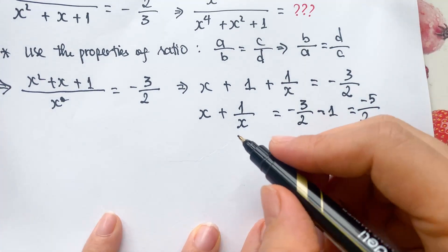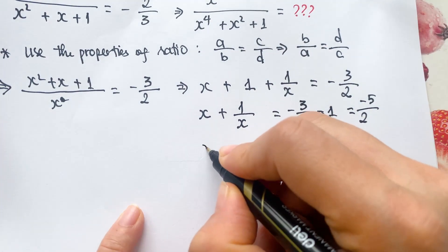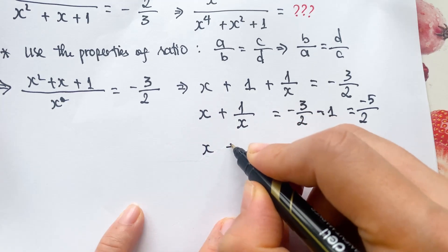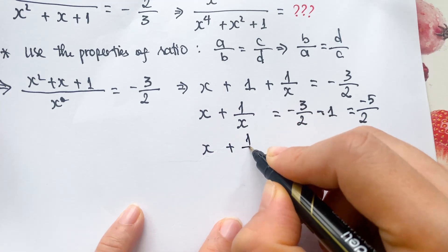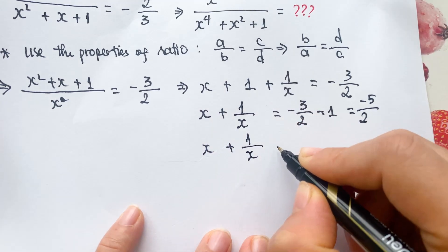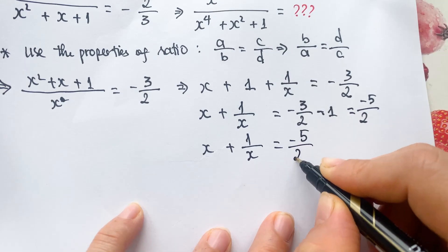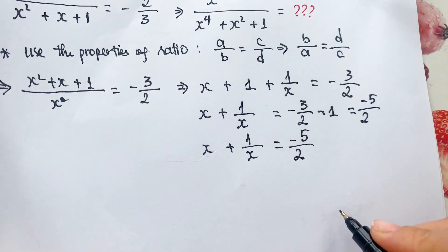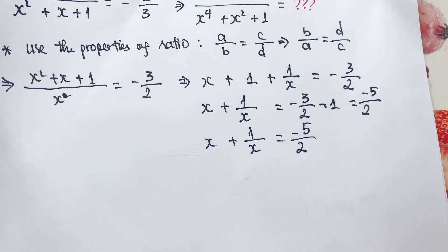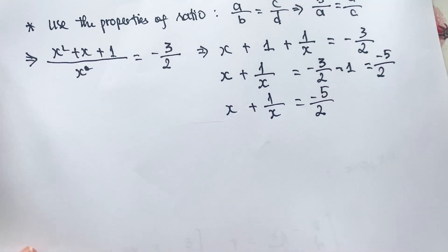So you can write x plus 1 over x equals minus 5 over 2.